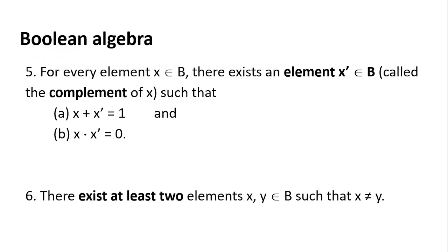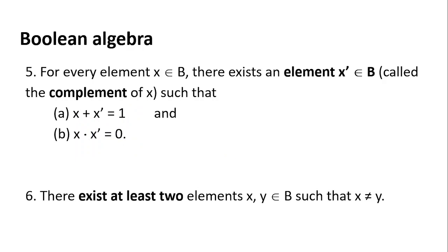Postulate 5 states there exists a complement element x' such that x plus x' gives the identity element for plus, and x dot x' gives the identity for dot. So to get the identity element, use the complement: x plus x' equals 1, and x dot x' equals 0.